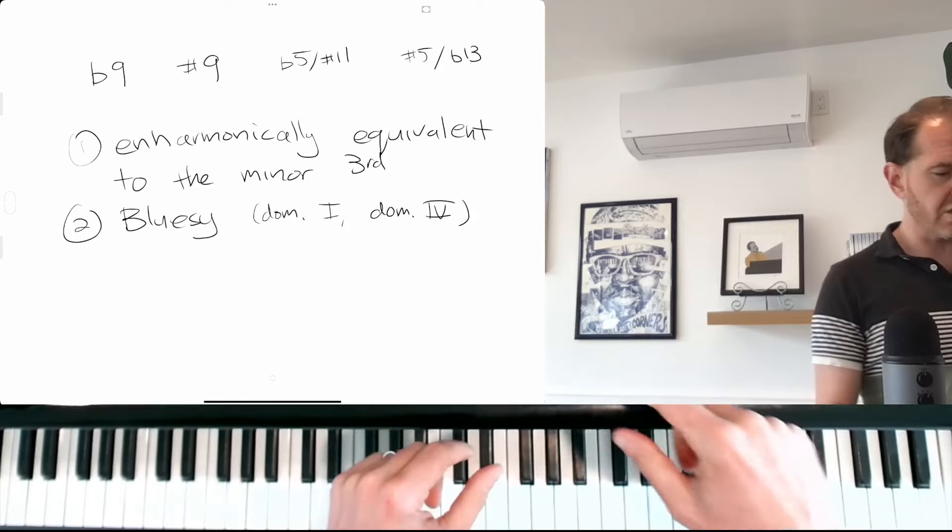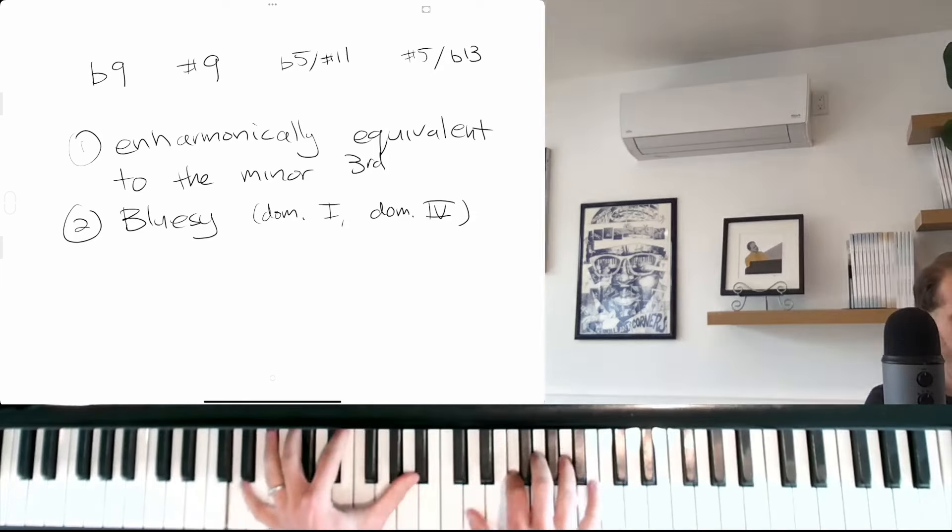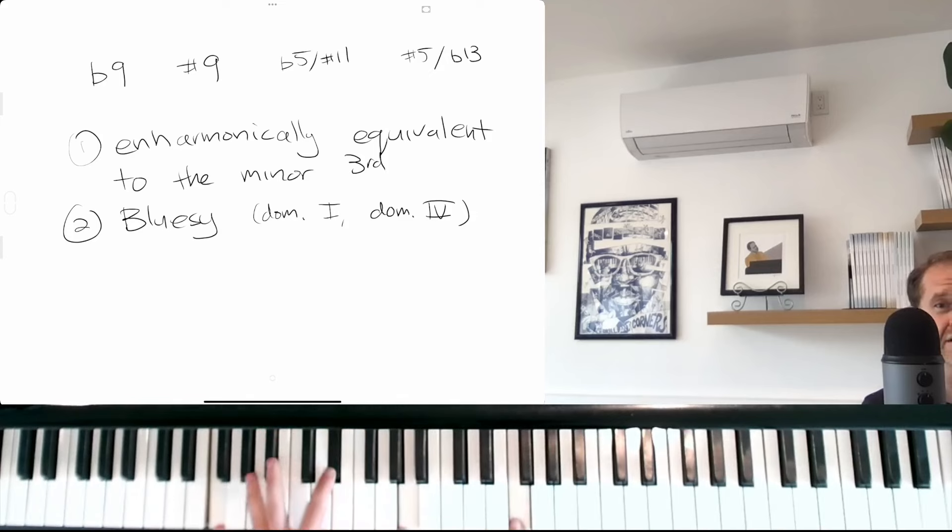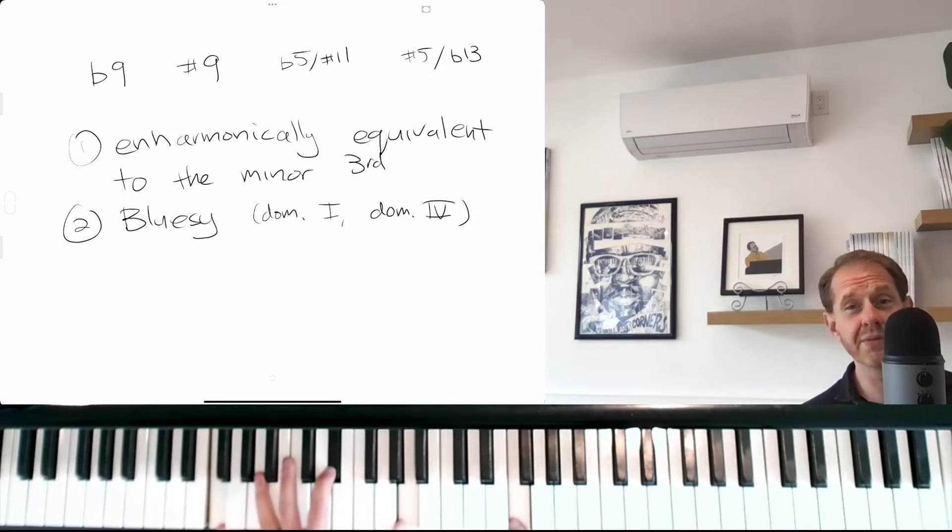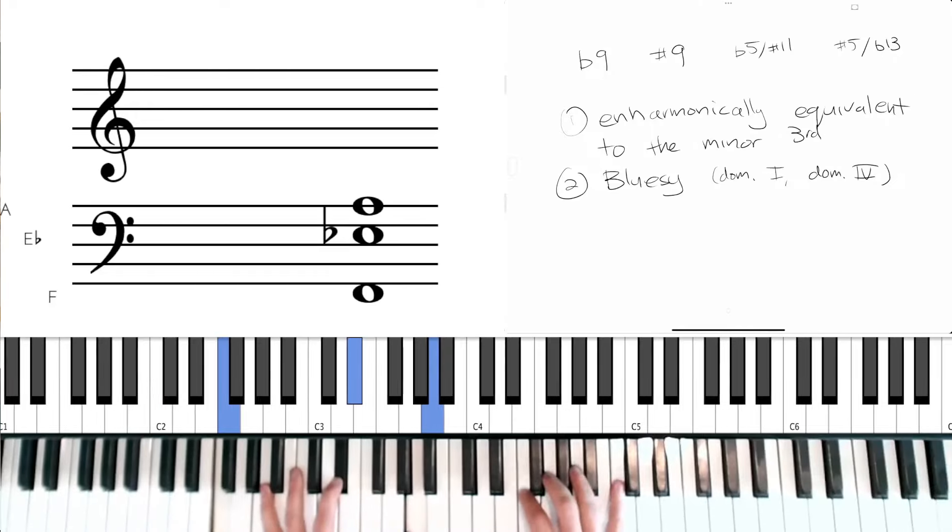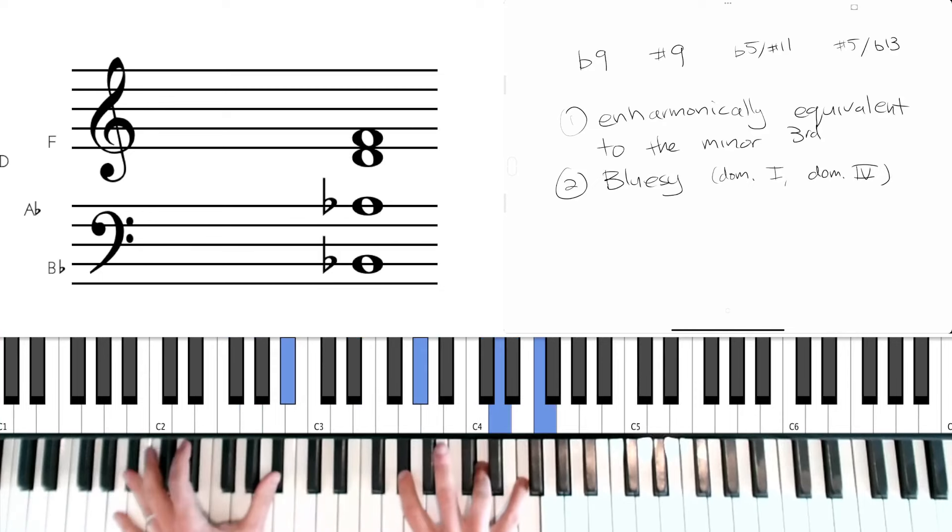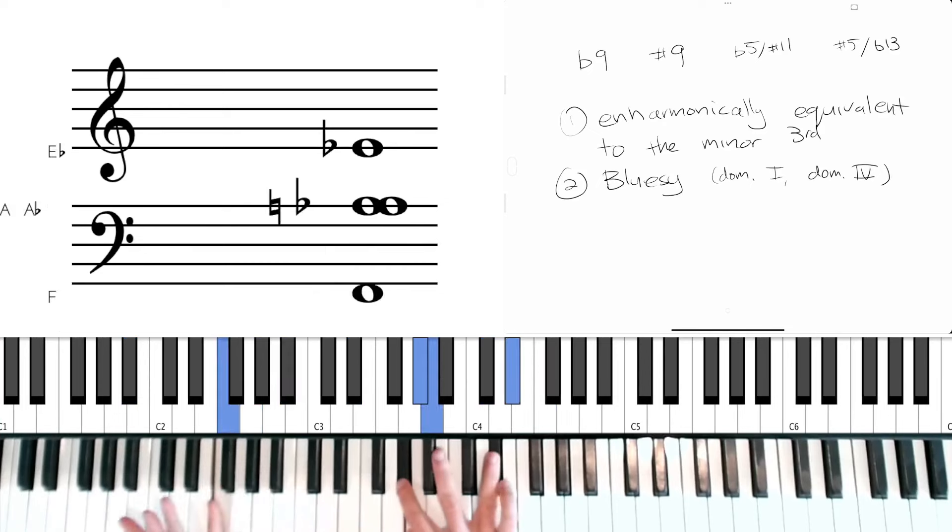For instance, some of my students are playing Honeysuckle Rose. And you get to this moment where you have a dominant one chord. We're in F and I'm playing an F7. This could be a really nice spot to add that sharp nine.